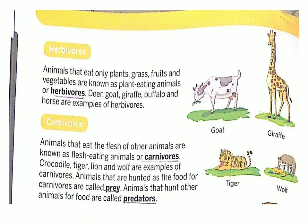Next is carnivores. Animals that eat the flesh of other animals are known as flesh eating animals or carnivores. Woh animals jo dusre animals ka flesh eat karte hain — unhain maar ke — unhain flesh eating animals ya carnivores bhi kehte hain. Crocodile, tiger, lion, and wolf are the examples of carnivores.